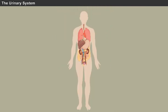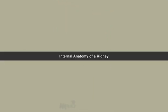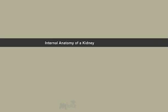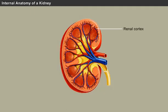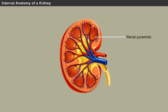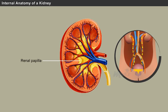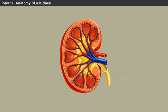A frontal section through the kidney reveals an outer region called the renal cortex and an inner region called the medulla. Within the medulla, there are 5 to 8 renal pyramids divided by columns of renal connective tissue. Each pyramid creates urine and terminates into a renal papilla.